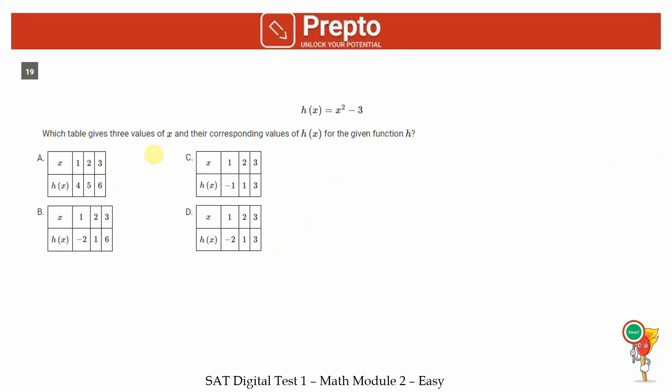19th question. Which table gives 3 values of x and the corresponding values of h of x for the given function? This function is x squared minus 3. We just need to substitute x. In all the options, we are looking at x as 1, 2, 3. Let's start by putting x as 1. We get h of x equals 1 squared minus 3, which is minus 2. So we can eliminate options A and C because for x equal to 1, h of x should be minus 2. Both remaining options have the same answer, so we will substitute 3. When x is 3, h of x is 3 squared minus 3, which is 6. Hence our answer is option B.